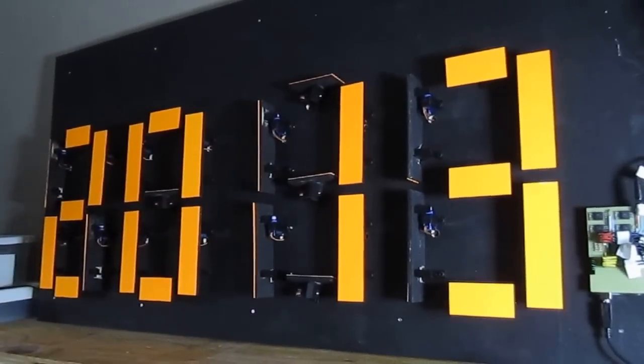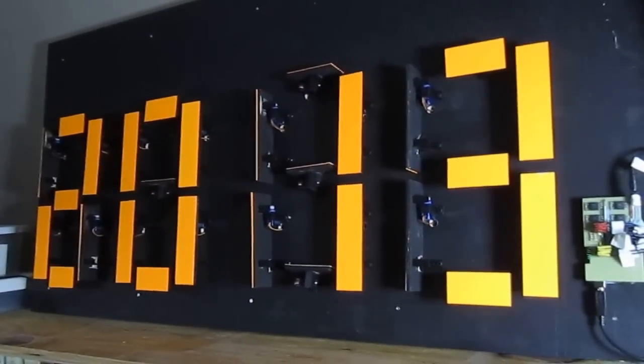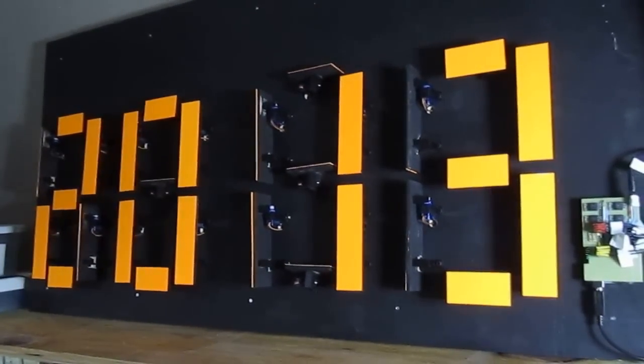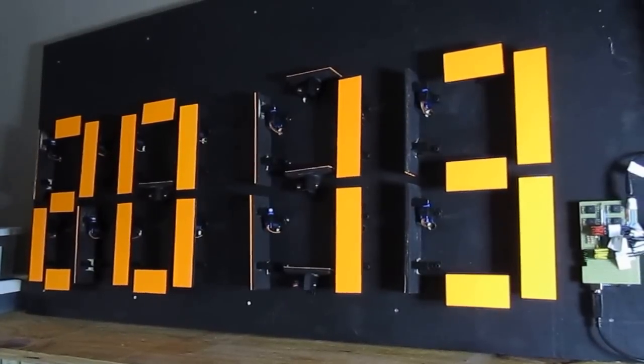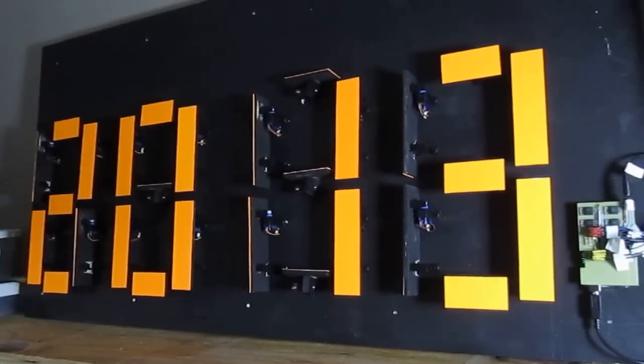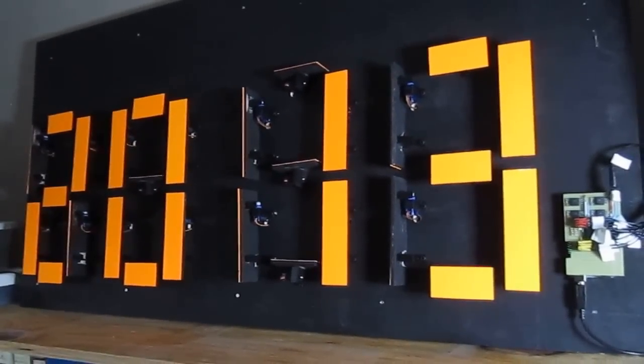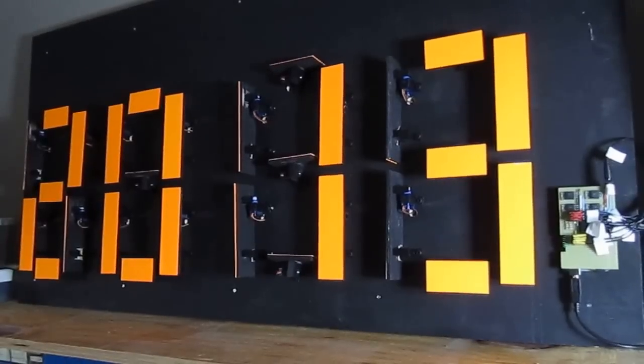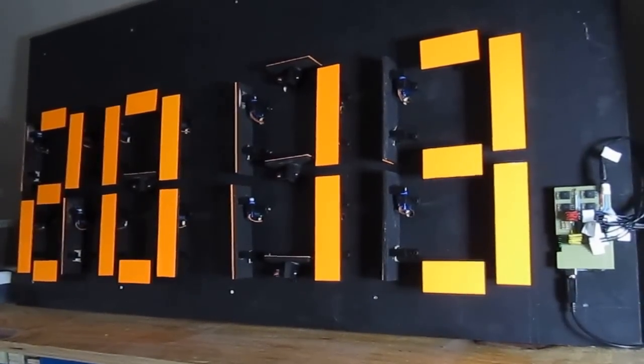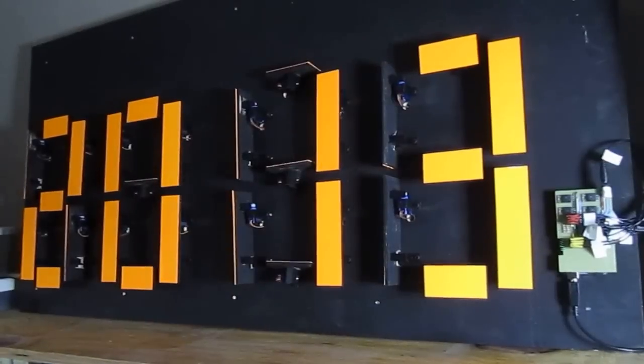That will give it power. And then once it has power, of course, then we need the PWM to tell it exactly what angle. So that's exactly what it does. When I put a digit in there, the software figures out, remembers where it's flipped one way or the other. So it only flips the ones that need to be flipped.